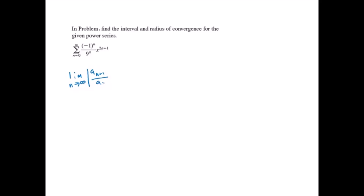we're going to write this given our series as the limit as n approaches infinity of x to the 2n plus 3 over 9 to the n plus 1, over a n which is x to the 2n plus 1 over 9 to the n, which is equal to: